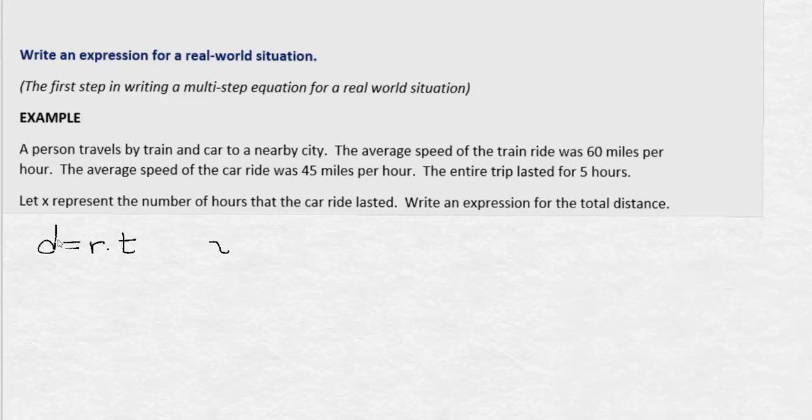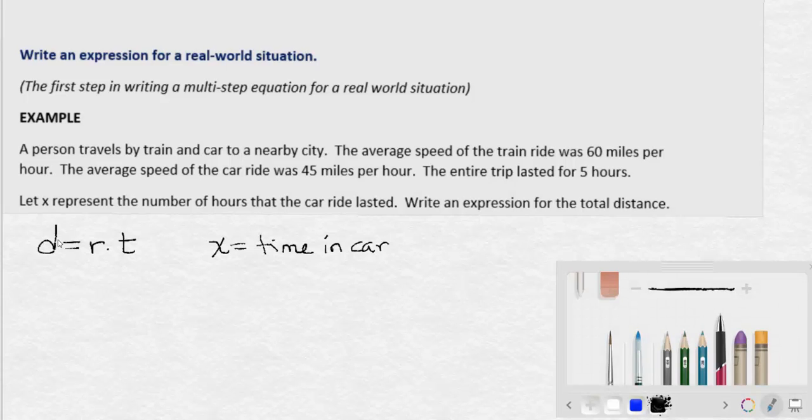Always make sure to note what your variable represents. In this case, x is the time of the car ride. If x is the time in the car, then let's go ahead and first use the distance formula, distance equals rate times time, to write an expression for the distance that the person traveled in the car.